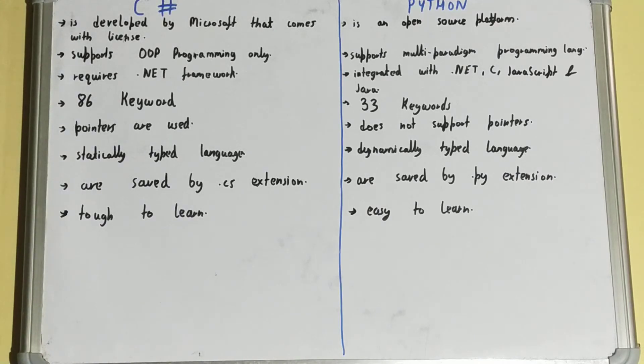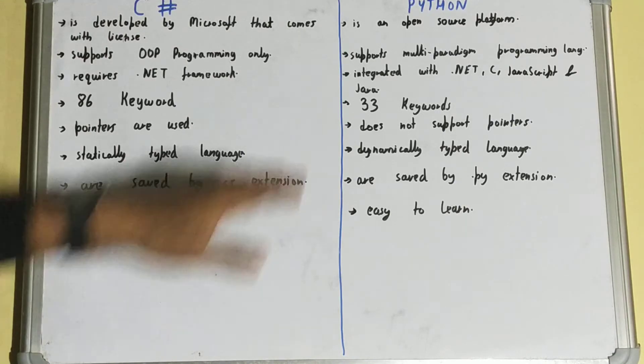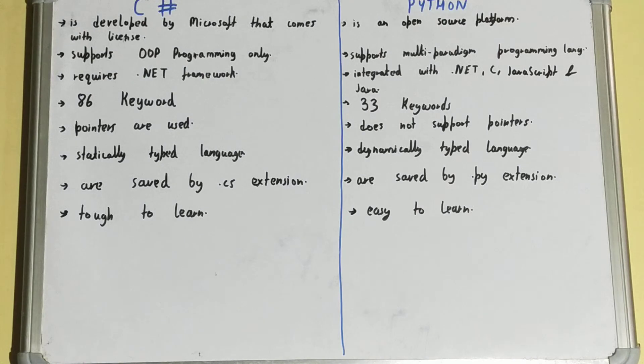C# supports OOP programming language only, but Python supports multi-paradigm programming languages like OOPs, structured, and others also.